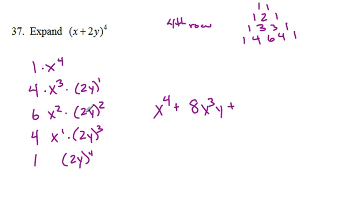My next term, I have to square this 2 first. Remember, order of operations, exponents first. So 2 squared is 4, times 6 is 24. I have x squared and y squared.